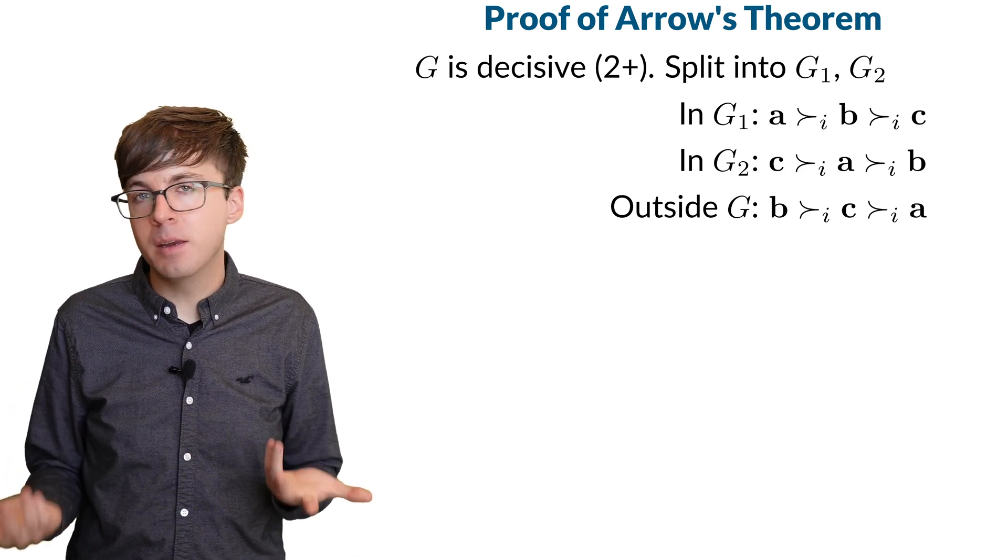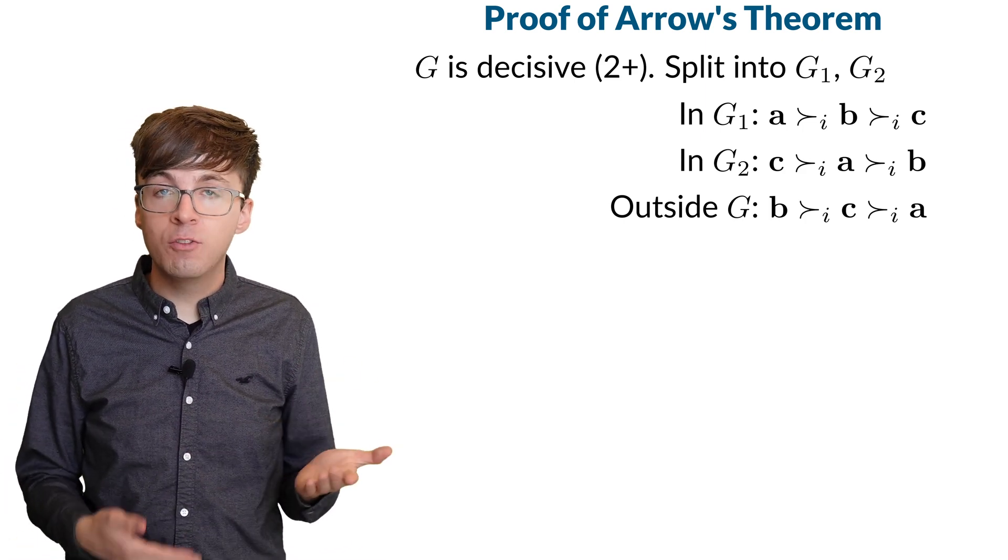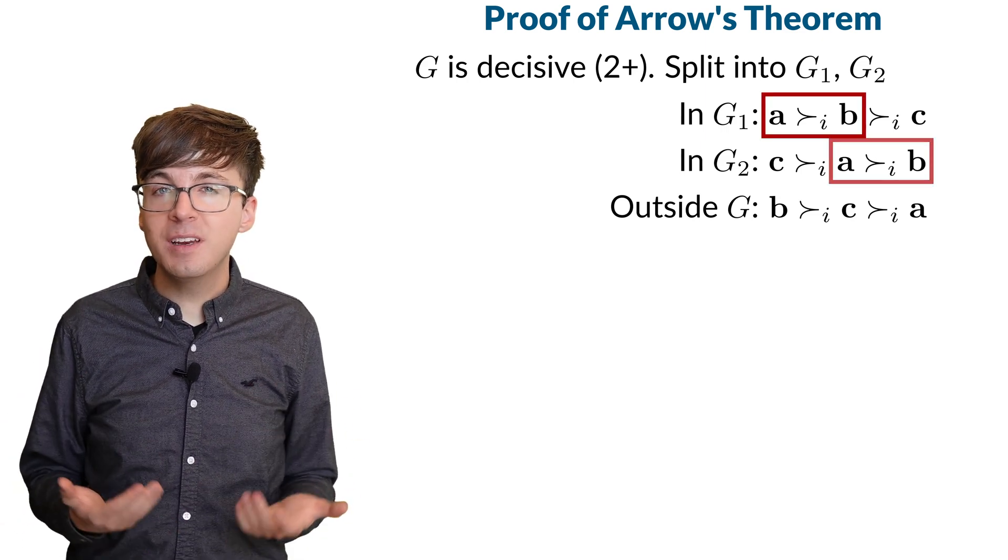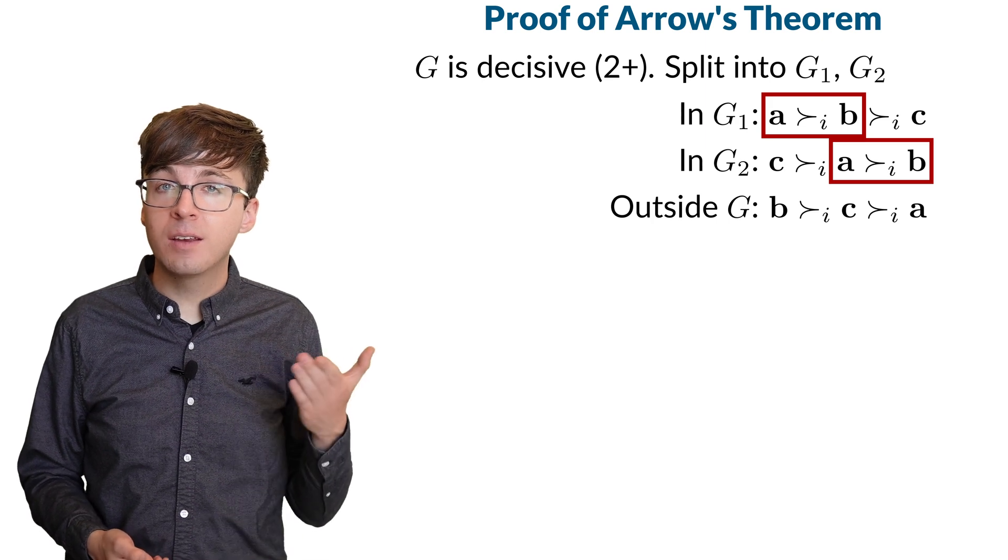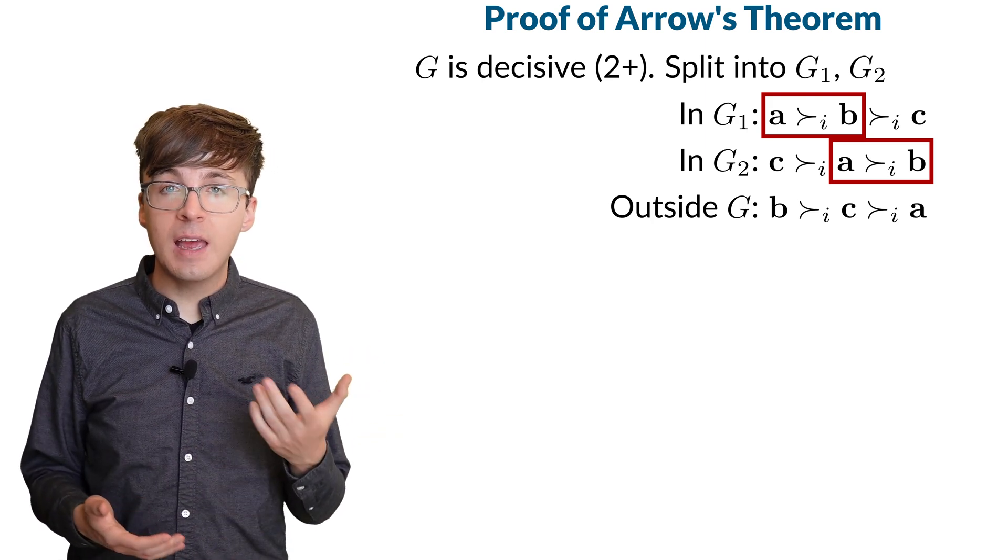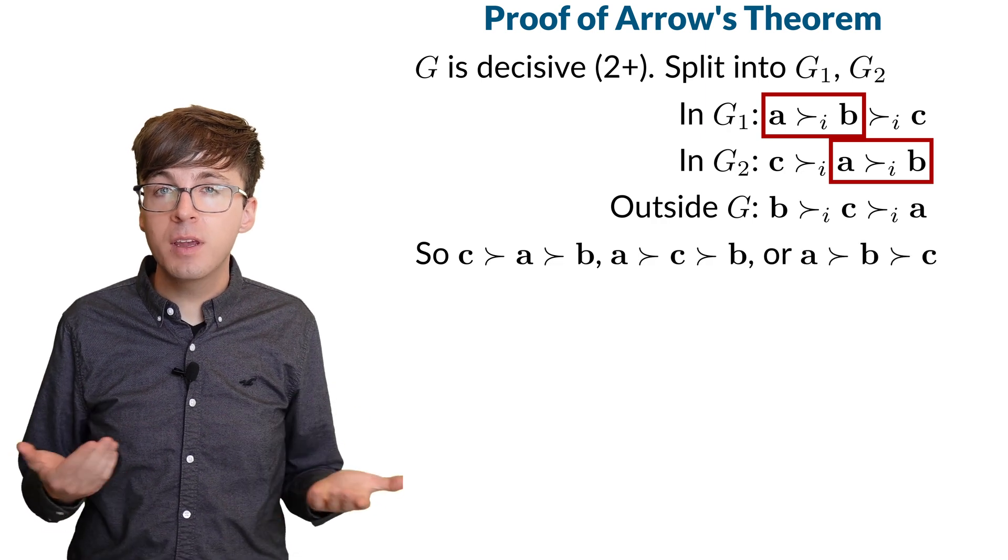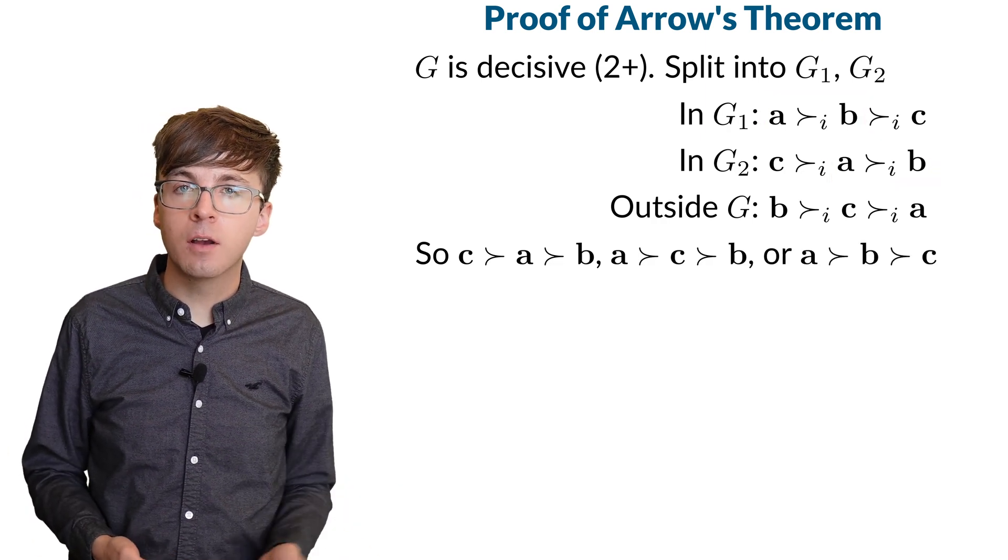Now note that last group might be nobody, and that's okay. But G1 and G2 have at least one person each. Since everyone in the decisive coalition ranks A above B, then A will beat B in the group's order.